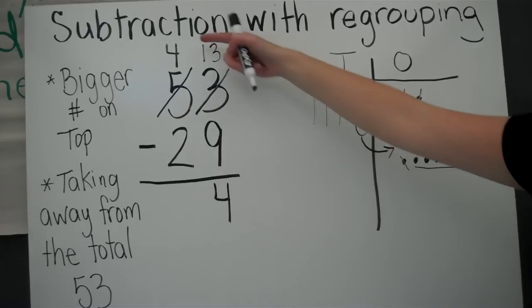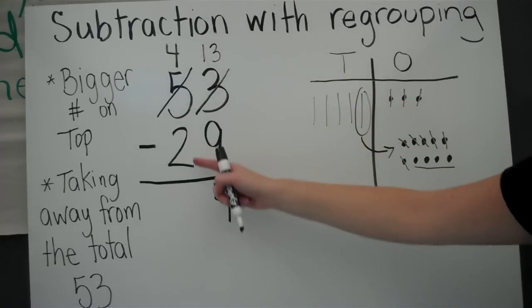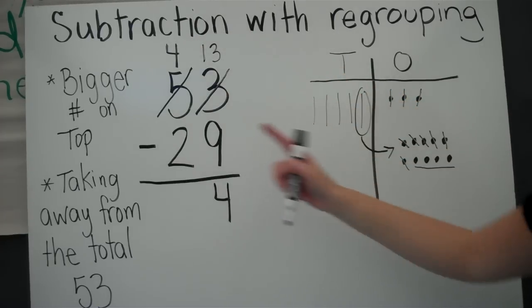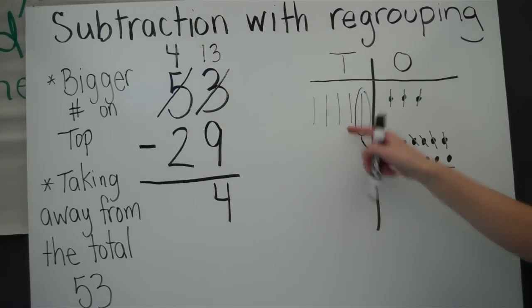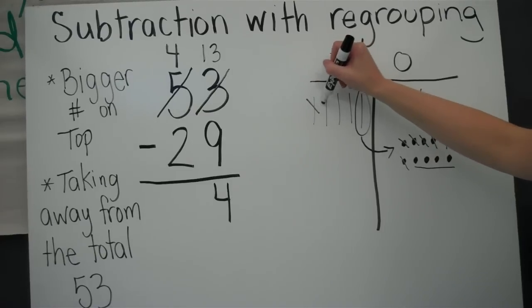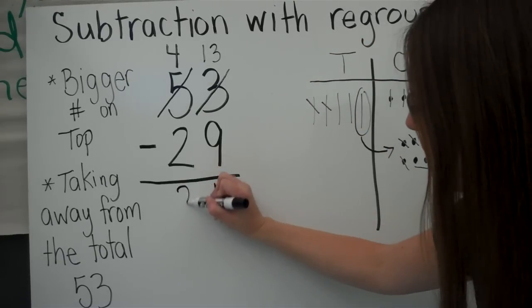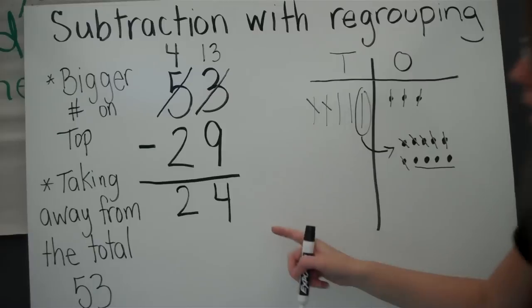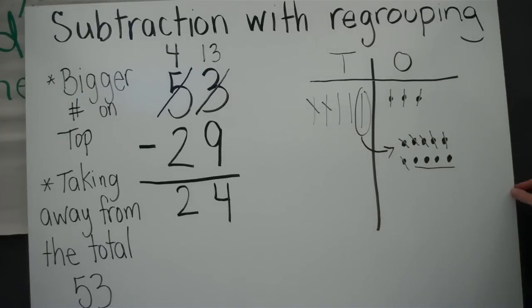Now I go to the tens column. I have four tens, and I take away two tens. I have two tens left. My answer is twenty-four.